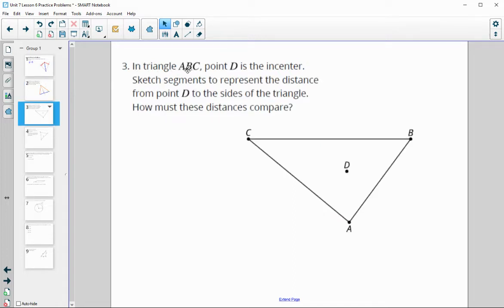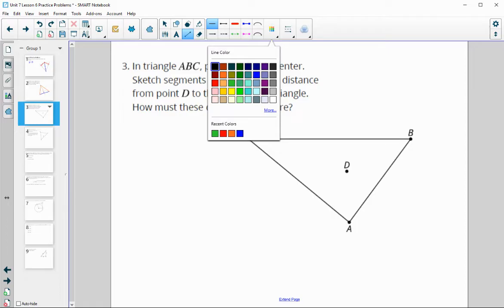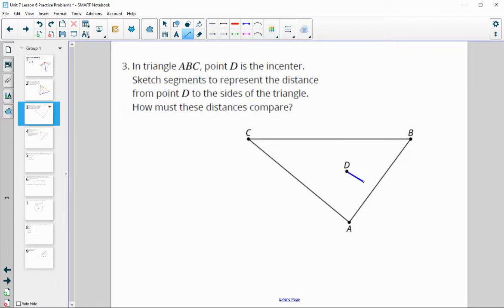Number three says in this triangle ABC, the point D is the in-center. Sketch the segments that represent the distance from D to the sides. We know that the in-center is equidistant from the sides of the triangle, and remember that distance needs to be right angles. So draw some perpendicular segments from D to each side. All of these segments that we drew should be equal to each other.